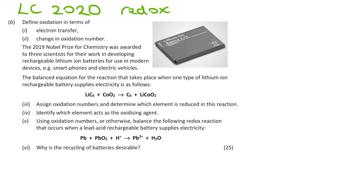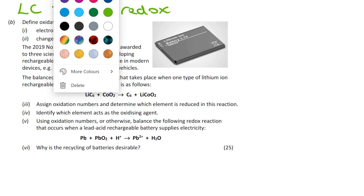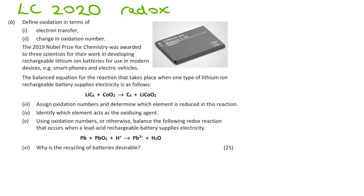It starts off in the same way as they usually do, defining oxidation in terms of electron transfer and change in oxidation number. As long as you can remember the OIL RIG mnemonic for electron transfer — where oxidation is loss of electrons and reduction is gain of electrons — in terms of electron transfer, oxidation is loss of electrons.